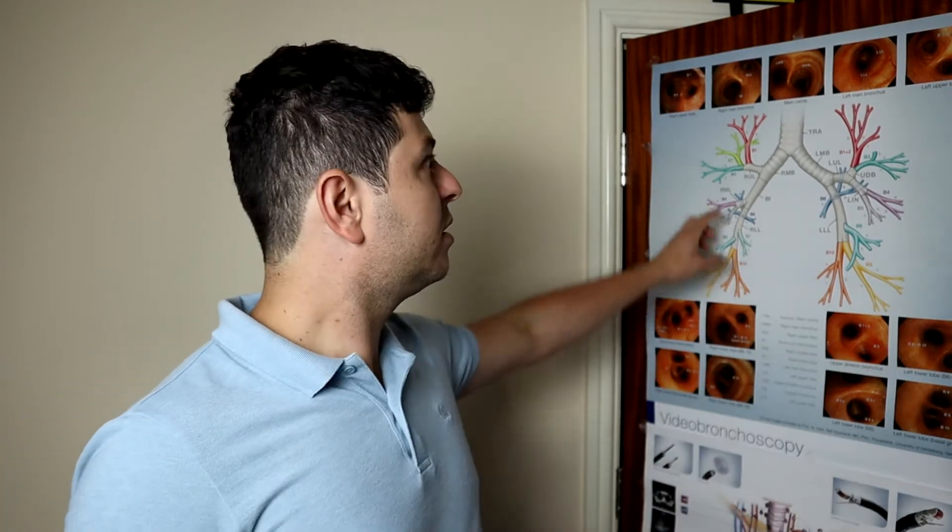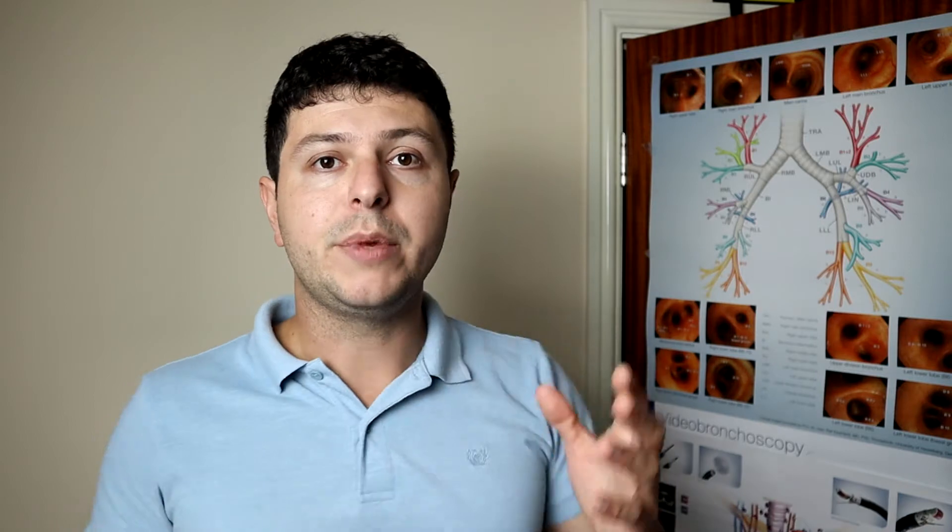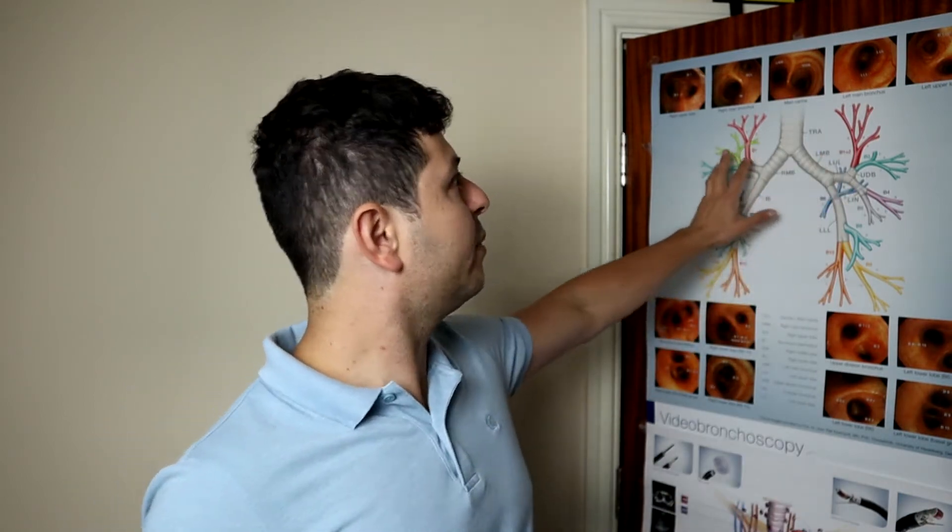Now, the bronchioles, that's where asthma happens. That's where there's inflammation. Inflammation is an irritation. So, these airways are irritated. Think about them as being red.